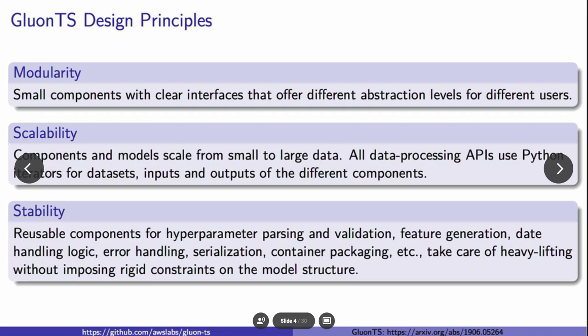And it's also stable. We have reusable components for hyperparameter parsing and validation, feature generation, date handling logic, error logic, serialization, container packaging. These help take care of the heavy lifting without imposing rigid constraints on the model structure.